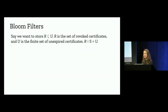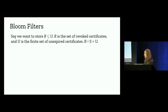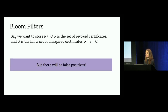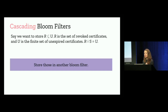Going forward, we think about set R — the set of revoked certificates — and set S — the set of unrevoked certificates — and together they make up the finite set U of unexpired certificates. If we want to store the set R in a bloom filter, there are going to be false positives. But what if we take those false positives and store them in another bloom filter? This is the idea of cascading bloom filters, and this is what CRLite makes use of.